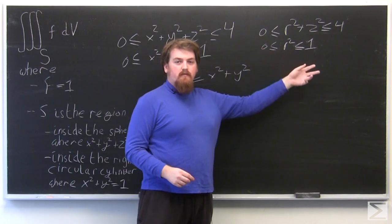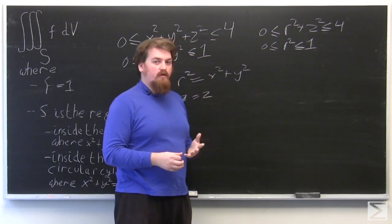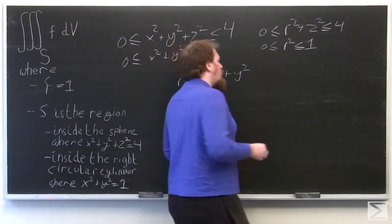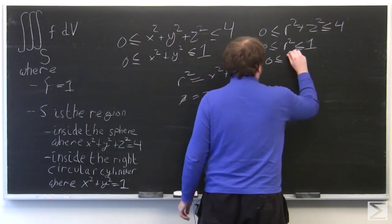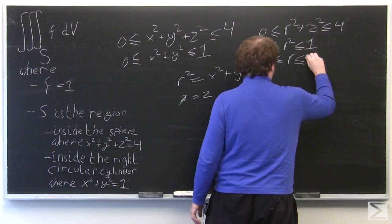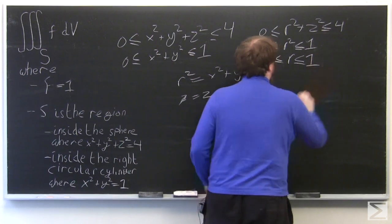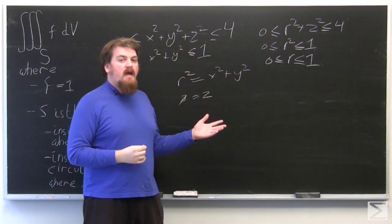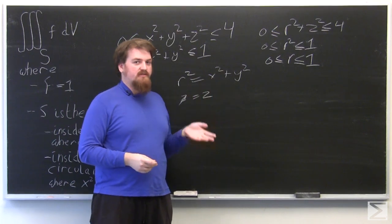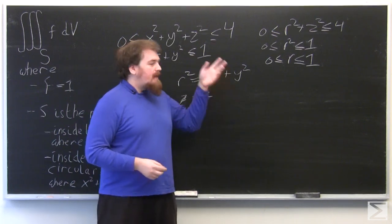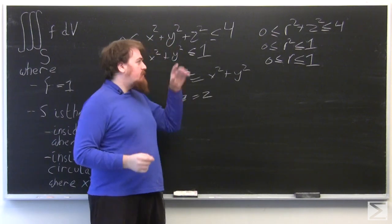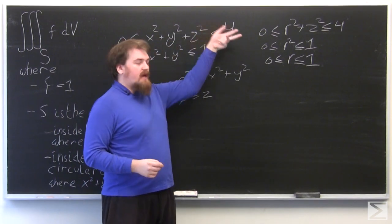We can simplify because in cylindrical coordinates r has to be positive, so r² ≤ 1 just becomes 0 ≤ r ≤ 1. This can be used as a limit of integration for r once we start setting up the integral. Now, if we want limits of integration for z, we need to manipulate the top inequality.